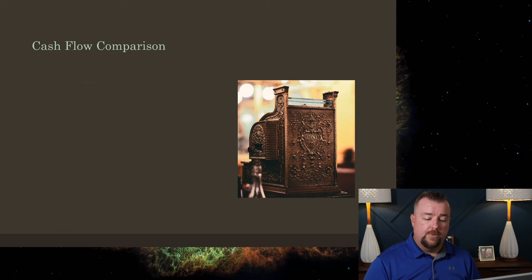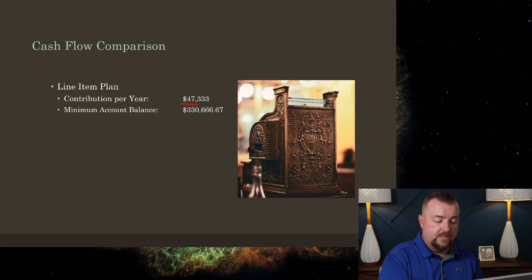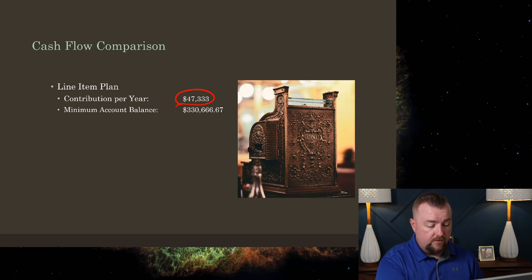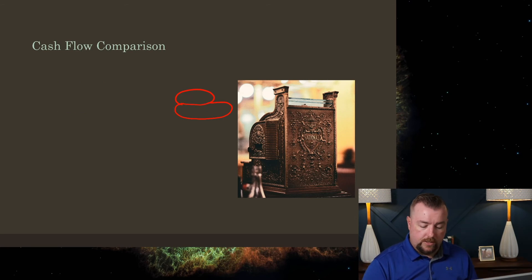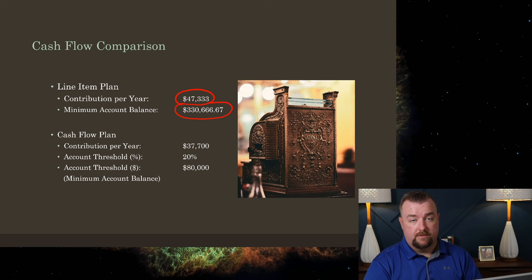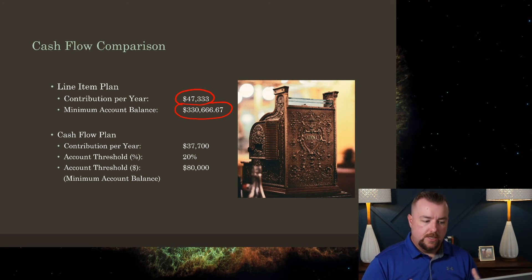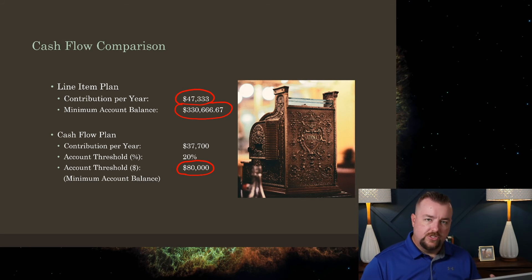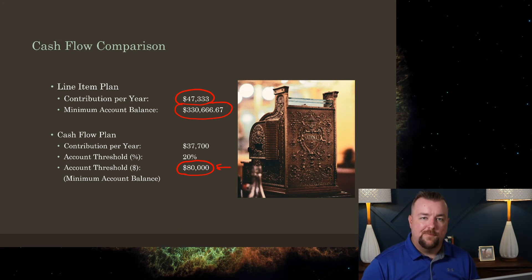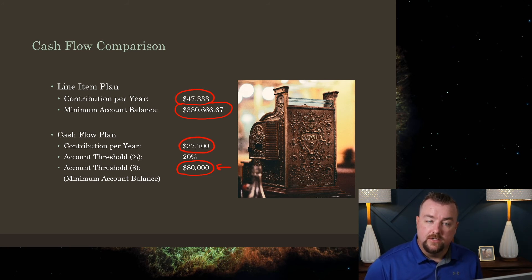Comparing this to the cash flow plan: with the line item plan, you're putting away $47,000 each year, and the account never goes below $333,000 — that lowest point was in 2046. Now with the cash flow plan, if you do things backwards and say you don't want $330,000 sitting in your account, you want to minimize how much is sitting there, you set that minimum threshold to $80,000. You're saying you don't ever want the account to fall below $80,000. When you calculate everything backwards from that threshold, you'll find that as an association you only actually have to put away $37,700 a year to accomplish this goal.